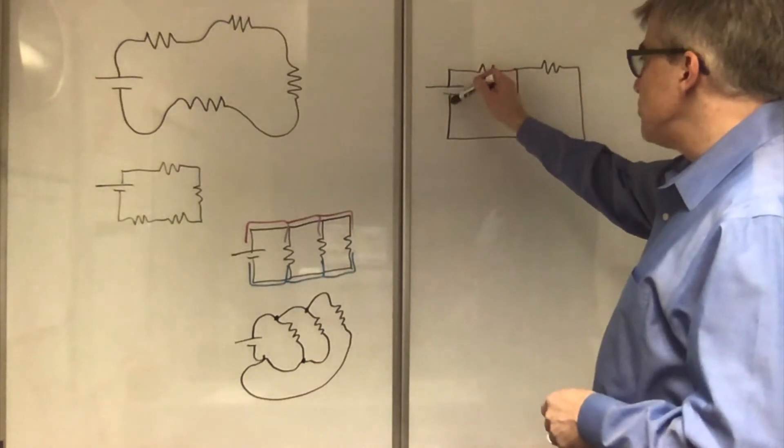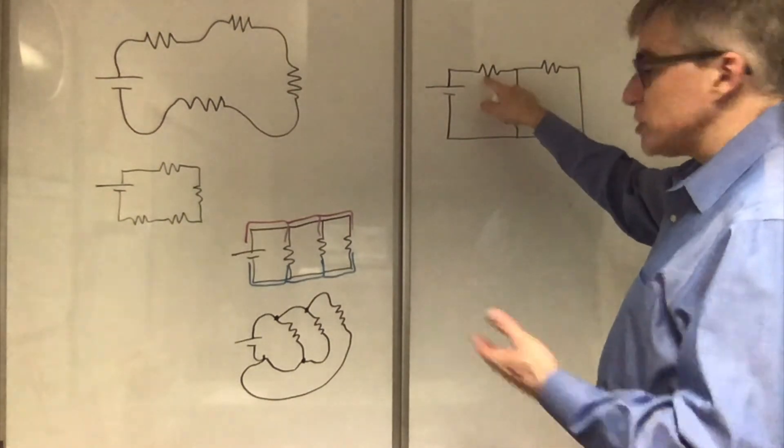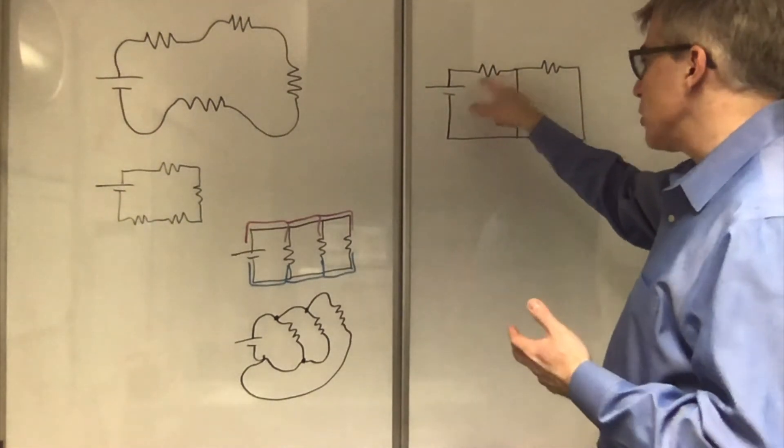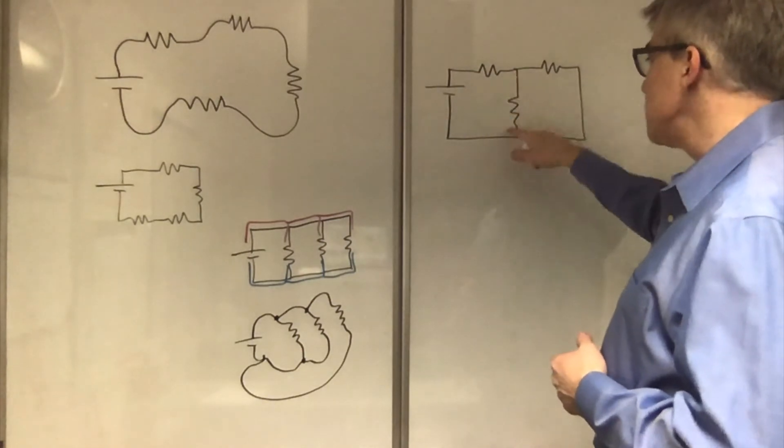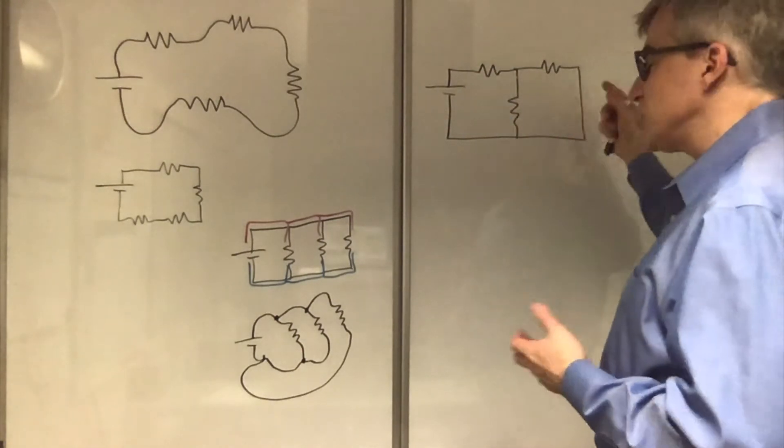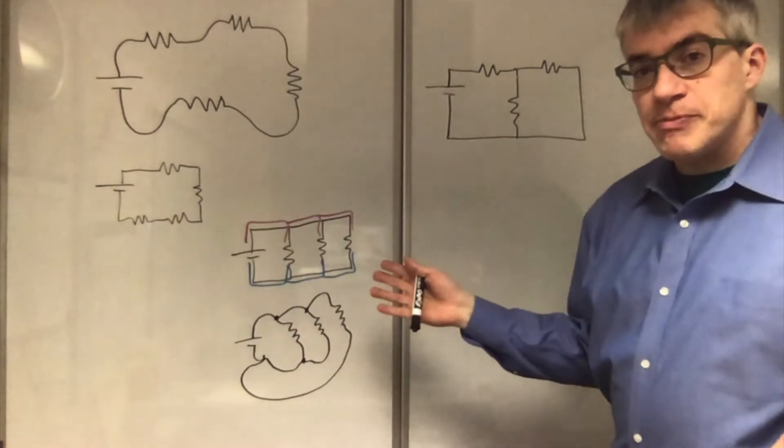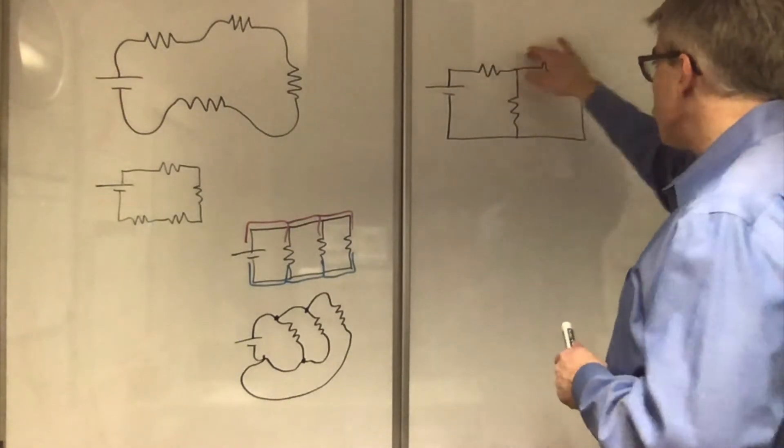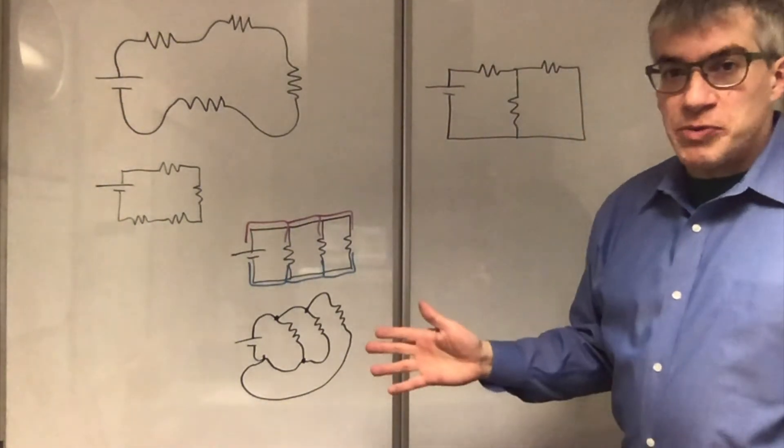So this has a battery. The battery and the resistor are sort of in series. They are on the same branch. But this branch just has this one, and this branch just has this one. Nothing is in series here. Just being drawn in the same row has nothing to do with being in series.